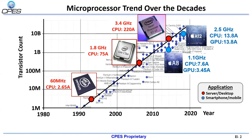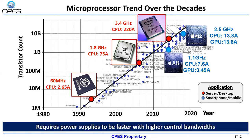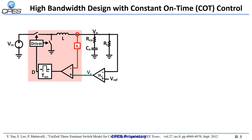The performance of microprocessors has steadily increased over the years due to Moore's law, but so has the power consumption. To power these microprocessors, power supplies are required to be faster with higher control bandwidth. A popular control method for this application is the constant on-time control.